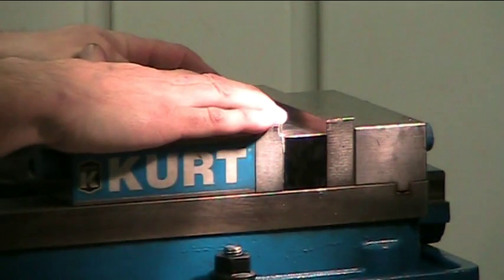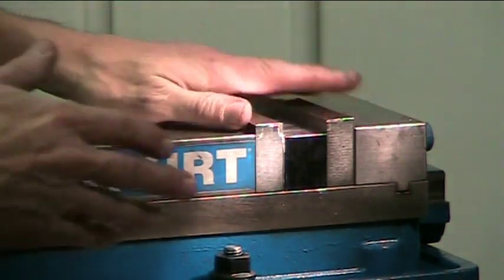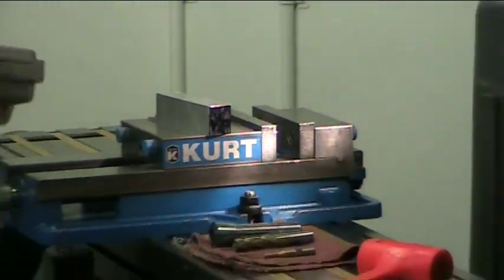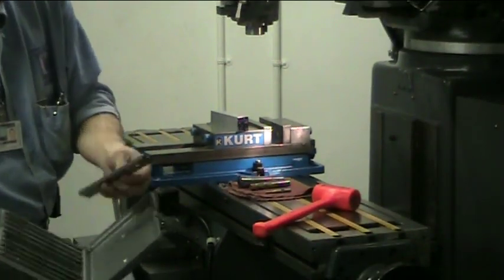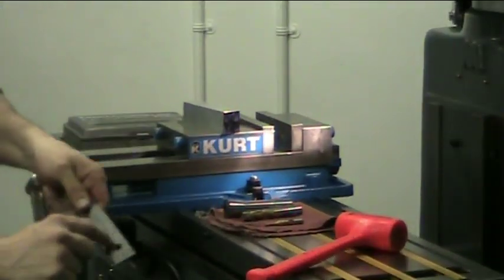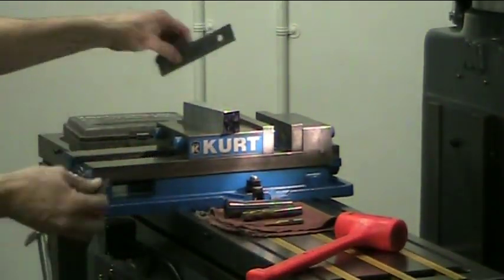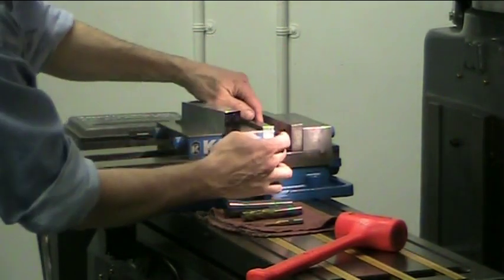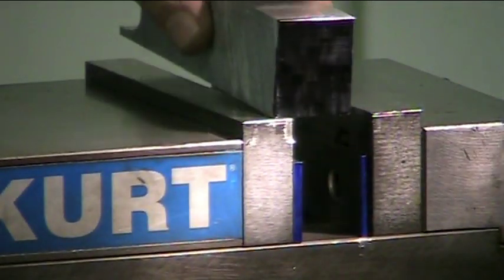If your material is lower than the top of your vise jaws, you should always use what they call parallels. You pick whichever size lengthwise parallel - they're written right here on the side. This one's an inch and an eighth in height. You set them up against the Kurt vise jaws and put your material on top, then tighten up the Kurt vise handle.